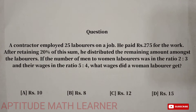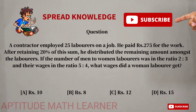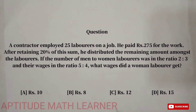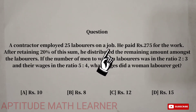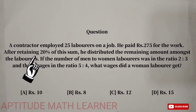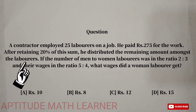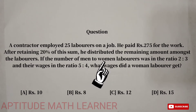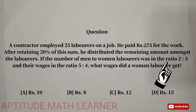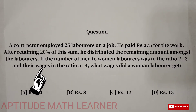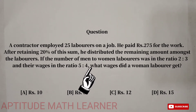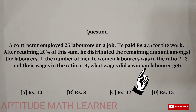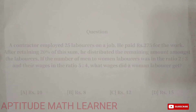Welcome to my YouTube channel Aptitude Math Learner. Today's question: a contractor employed 25 laborers on a job and paid rupees 275 for the work. After retaining 20% of this sum, he distributed the remaining amount amongst the laborers. If the number of men to women laborers was in the ratio 2:3 and the wages in the ratio 5:4, what wages did a woman laborer get?